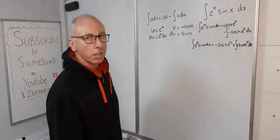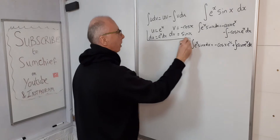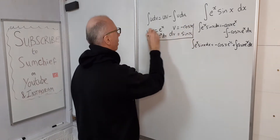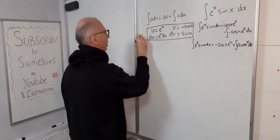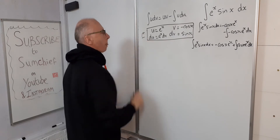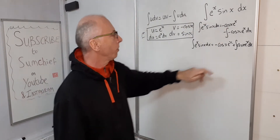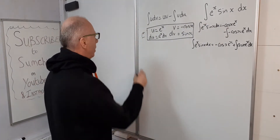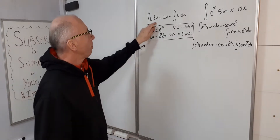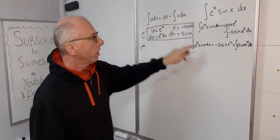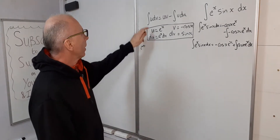That's part of the answer, but now we're left with another integral. This is what's called integration by parts twice. We've already done the first one — now for the second one, we need to go through the u dv formula again for this new integral.